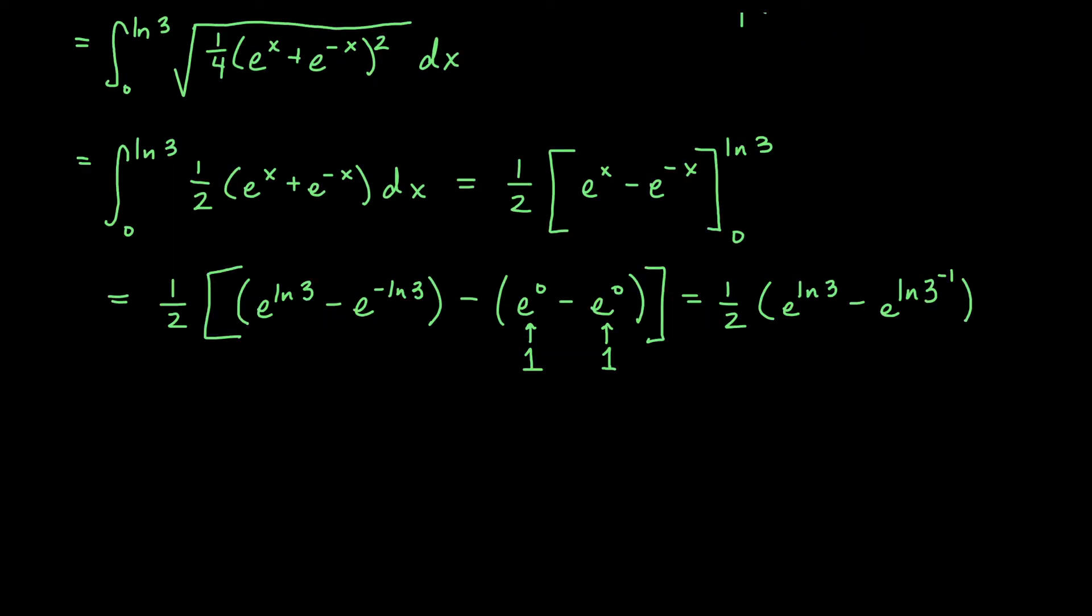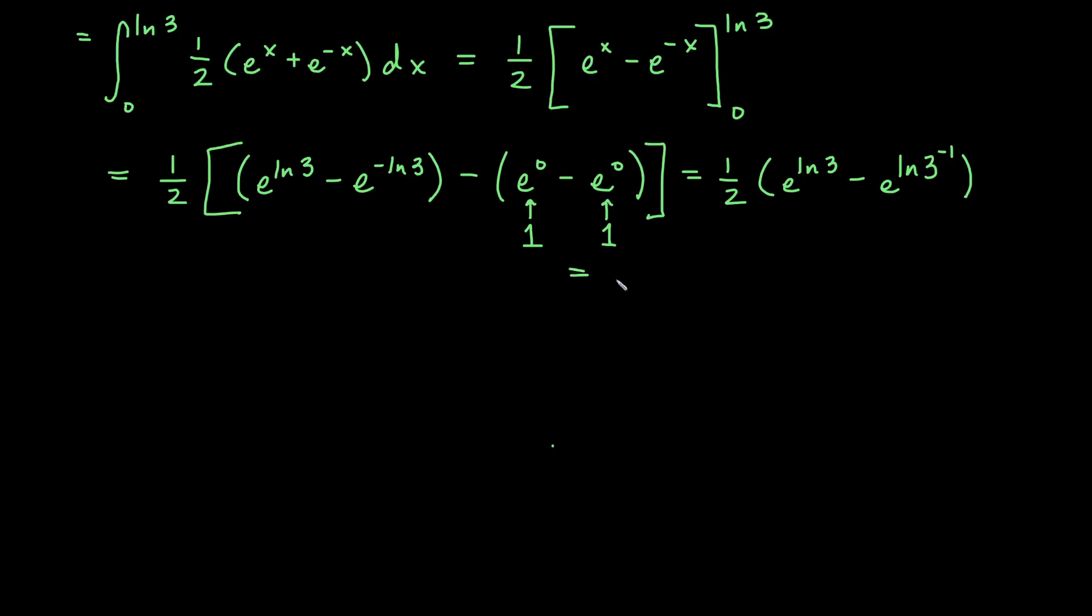Okay, so if we do that now, we will have 1 half e to the ln of 3 minus e to the ln. And what's 3 to the negative 1 power? Well, that's the reciprocal of 3, which is 1 third. And now hopefully we can see that e to the ln of something is just that something. These are inverses. So we get 1 half e to the ln 3 is just going to be 3 minus e to the ln of 1 third.